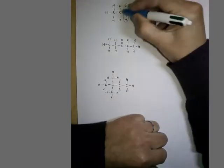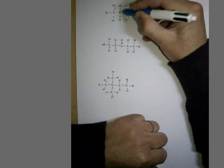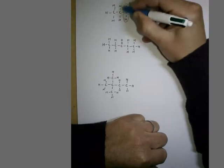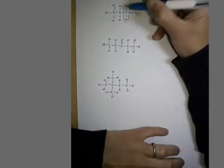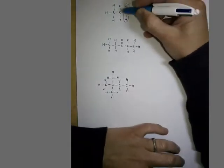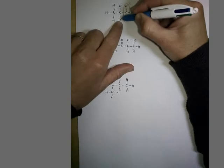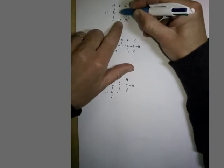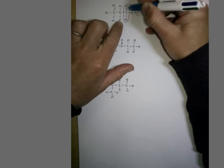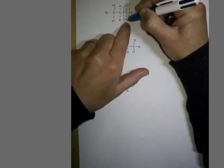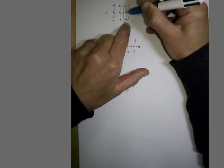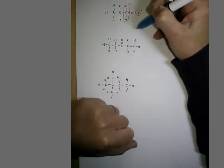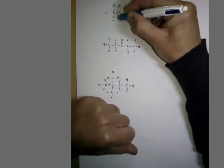Moving along, we've got another CH2. You might initially think the hydrogens in this CH2 are in the same environment as the previous ones, because they're both part of a CH2 group. However, if we compare the two, this hydrogen is attached to a carbon attached to a CH3, an H, and a CH2OH — whereas the other was attached to a carbon with an H, an OH, and a C2H5. So their view of the molecule is actually different — this is a third hydrogen environment.